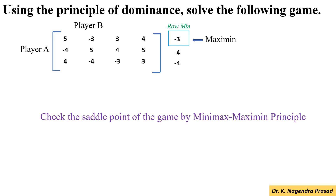Similarly, next we determine the minimax value. For this, first identify the maximum value in each column and write it down under the column max. In the first column, the maximum value is 5. And in the second column, the maximum value is 5.